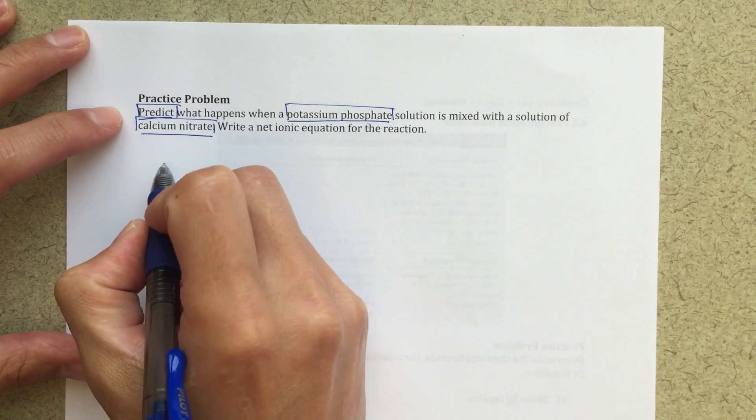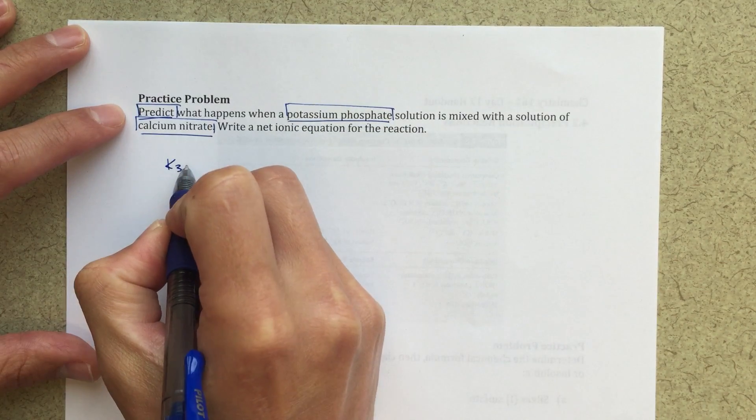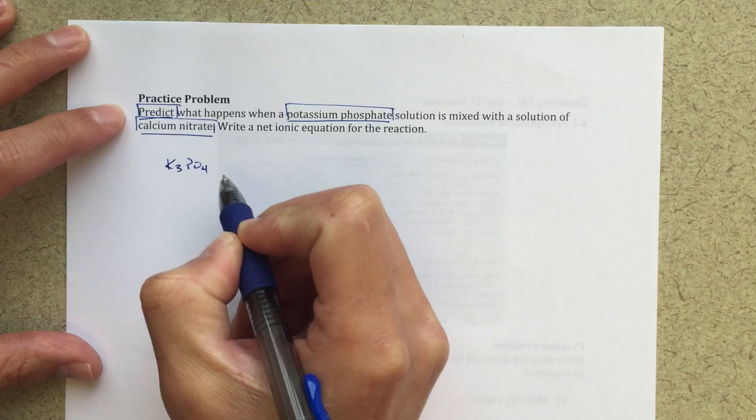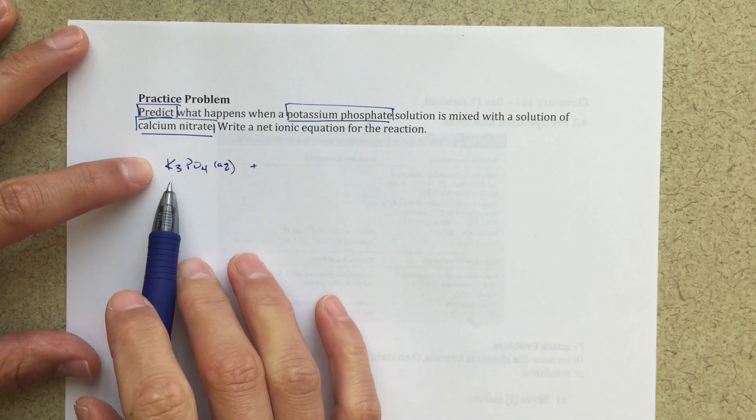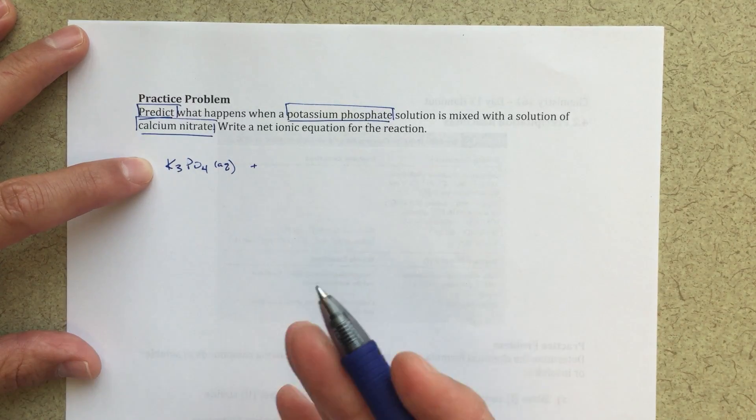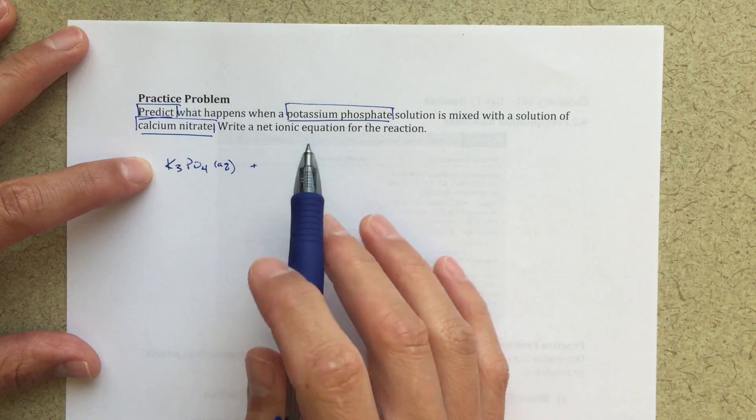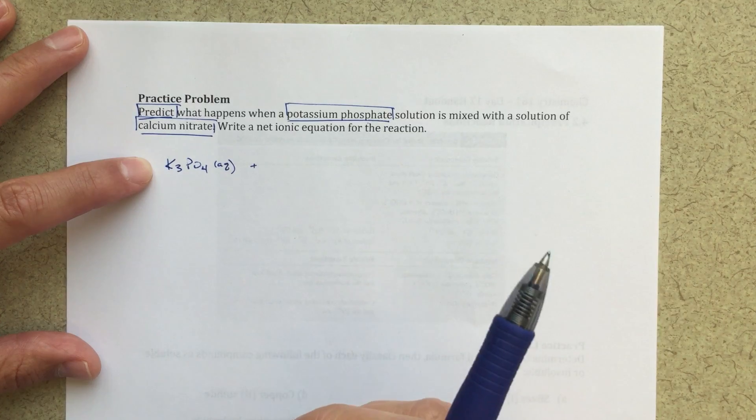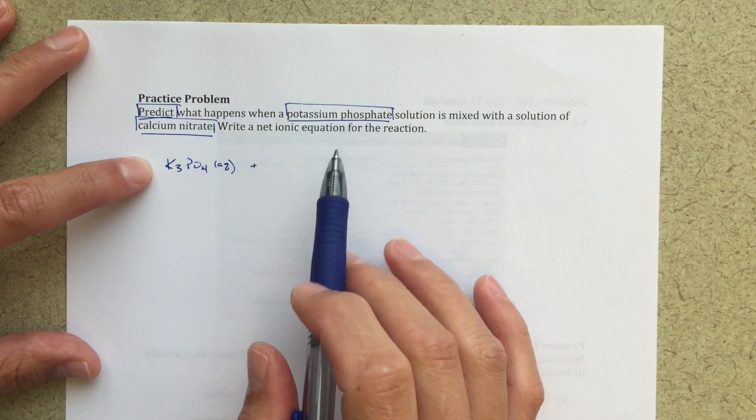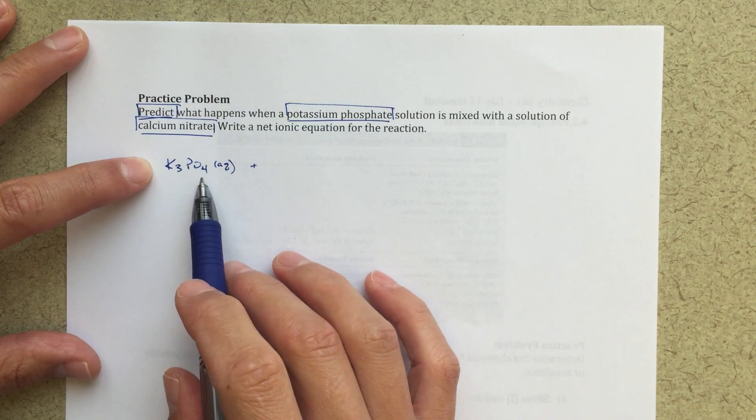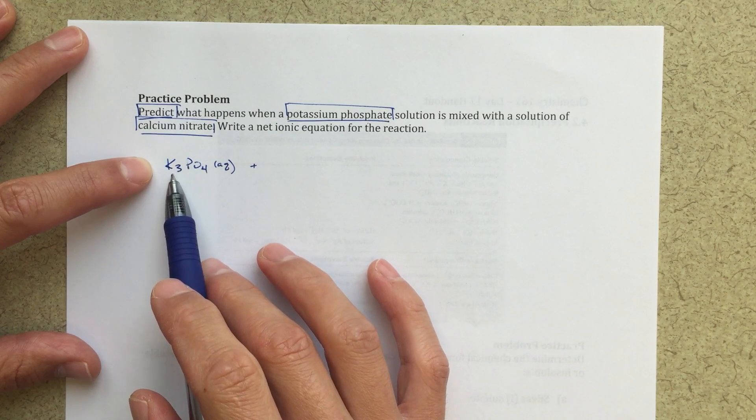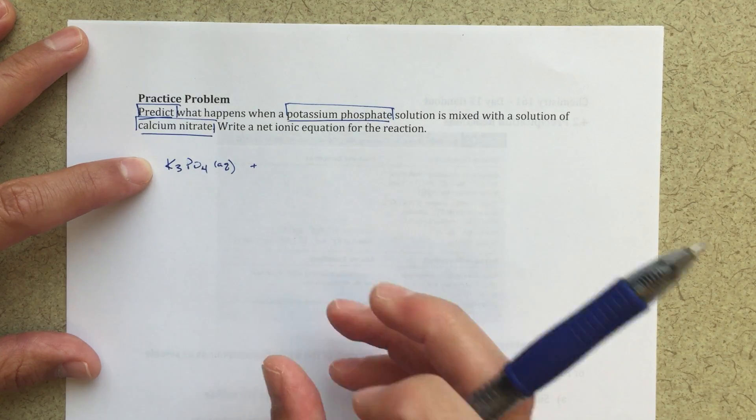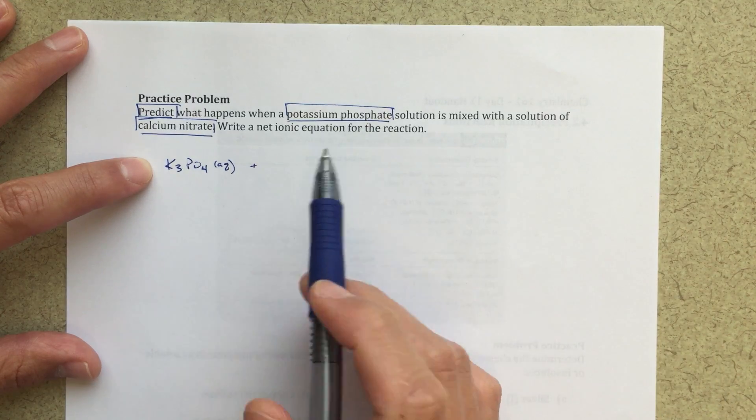And potassium phosphate, I know is going to be K3PO4, and I'm going to say that's aqueous. And I'm coming up with this K3PO4, because potassium is K, and I know that potassium in an ionic compound will have a plus one charge. Phosphate, that's a polyatomic ion that is PO4 with a three minus charge.